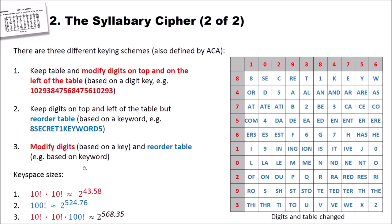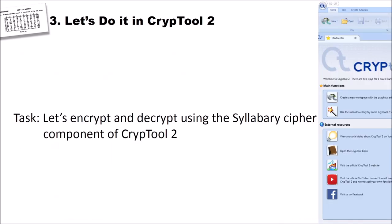Then we have the third keying scheme. Here you have to combine both keying schemes and key space sizes. So we have 10 factorial times 10 factorial times 100 factorial, and this is about 2 to the power of 568.35. So in fact, this cipher here has a very, very large key space when you use the third keying scheme. Now that we know how the syllabary cipher works, let's encrypt and decrypt using the syllabary cipher.